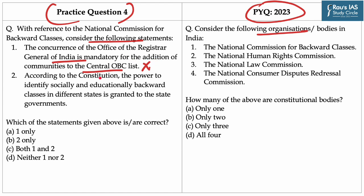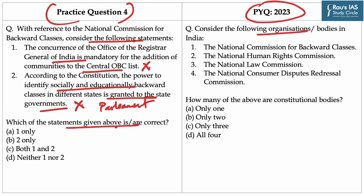Statement 2: According to the Constitution, the power to identify socially and educationally backward classes in different states is granted to the state governments. This statement is also incorrect because it is the President who has the authority to name socially and educationally backward classes in various states and union territories, in conjunction with the governors of the relevant state. However, if the list of disadvantaged classes is to be changed, the bill needs to be passed by the Parliament of India. As both statements are incorrect, option D is the right answer. Whereas PYQ is concerned, option A was the right answer.